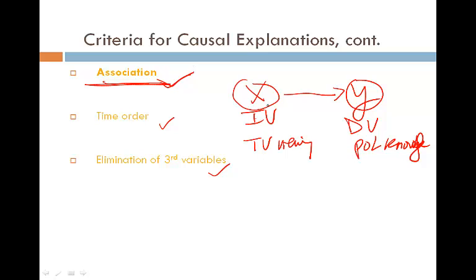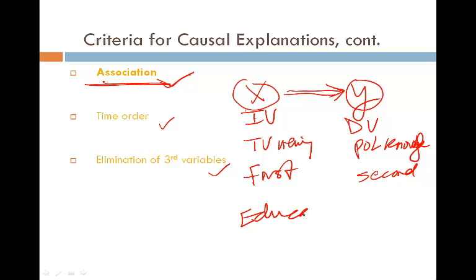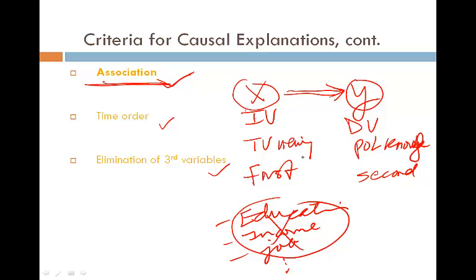Number two is time order: the independent variable must take place first, and the dependent variable should take place second. That is why we can say the independent variable causes the dependent variable. Third is elimination of third variables — we want to eliminate all other variables such as education, income, occupation, and job. If we can do that, then we can say X causes Y. Those are the three criteria for causal explanations.